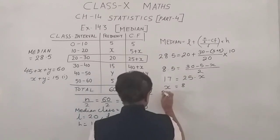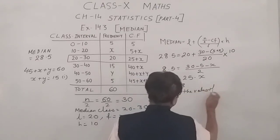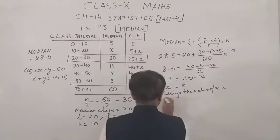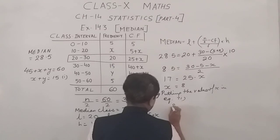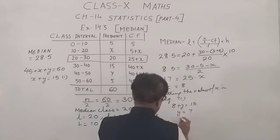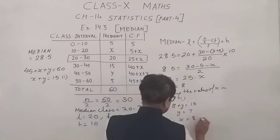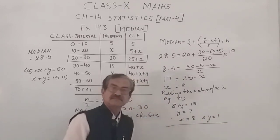Now, simply, by putting the value of x in equation number 1, x plus y is 15, so 8 plus y is equals to 15, y is equals to 7. And in the end, therefore, x is equals to 8 and y is equals to 7. Thank you very much.